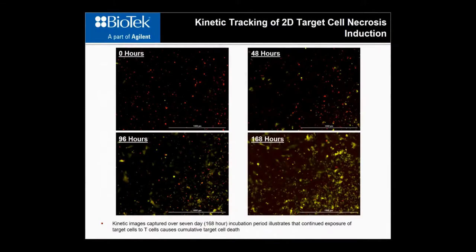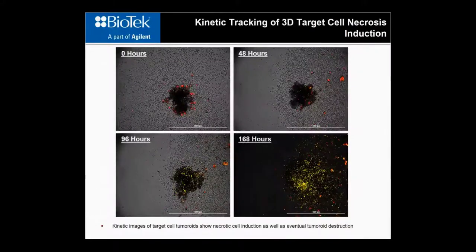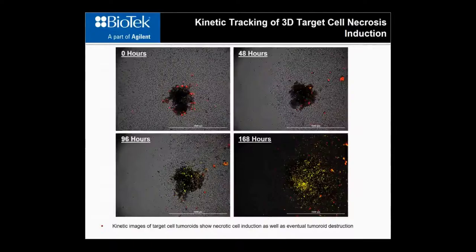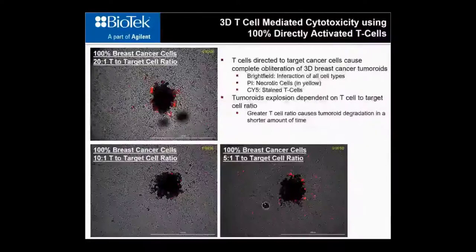Looking at the overlaid brightfield and propidium iodide images, we can see necrotic cells at the same positions of T-cell binding, as witnessed by an increase in propidium iodide signal at those locations. When looking at images captured over time using overlaid propidium iodide and Cy5 channels, the number of necrotic cells dramatically increases over time, confirming that binding of the T-cells to the target cells induces a toxic effect. The same can be said for target cells cultured in 3D — T-cell clustering and binding causes an increase in necrotic cells within the tumoroid, and by seven days the tumoroid is literally destroyed by the T-cell interaction, causing a dispersal of cells within the image.